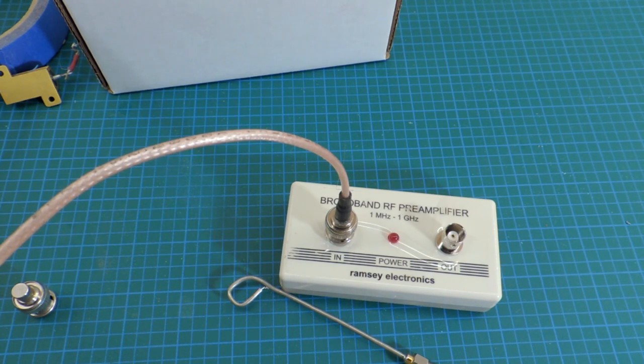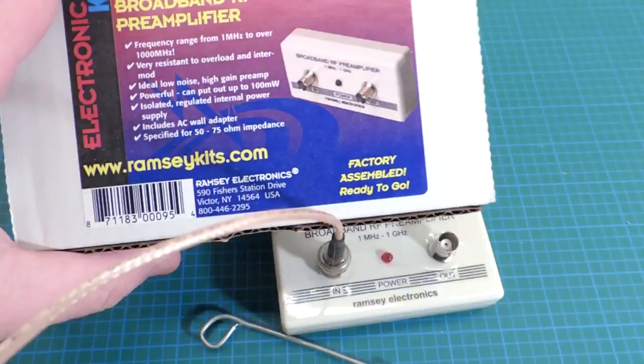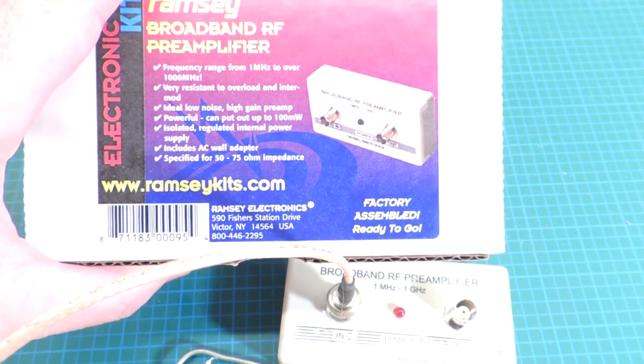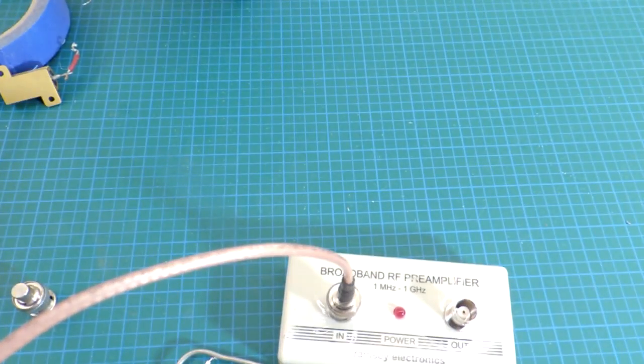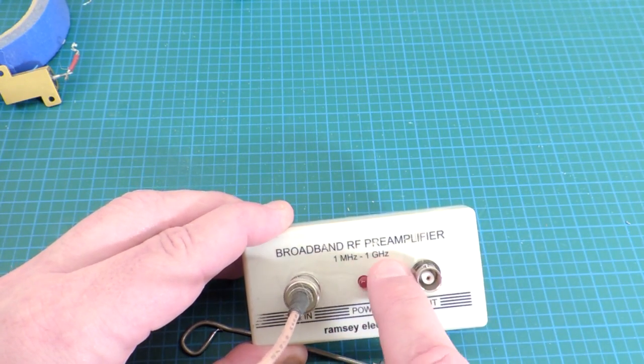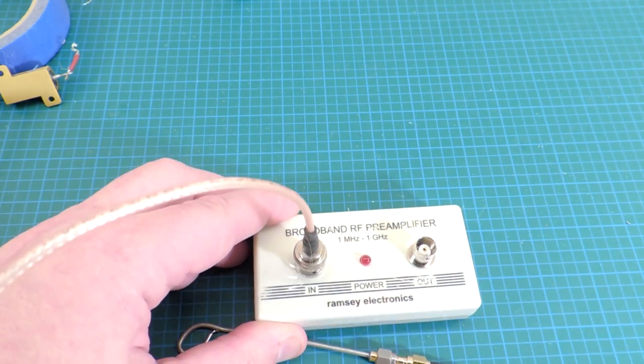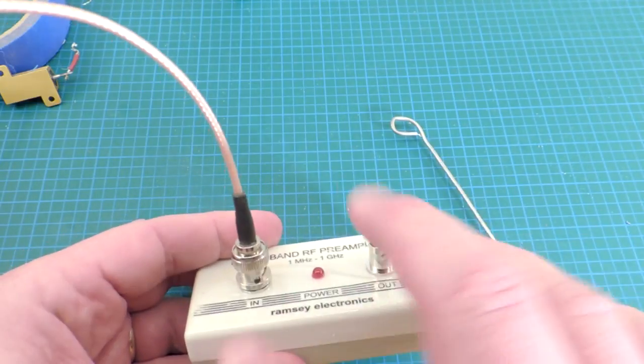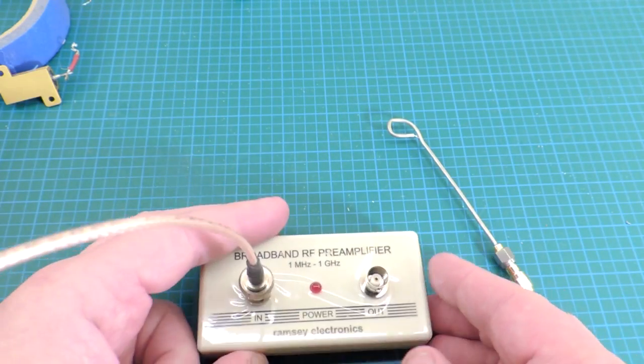So I found this kit from Ramsey Electronics - it's a broadband RF amplifier they call it. I think it's for probably boosting signals to televisions or such. But it has a really wide range - one megahertz to one gigahertz - so a really broadband amplifier. And the idea of course is the near-field probe goes to one side, this goes to the spectrum analyzer, and it does work. This amplifier is actually quite a good amplifier.